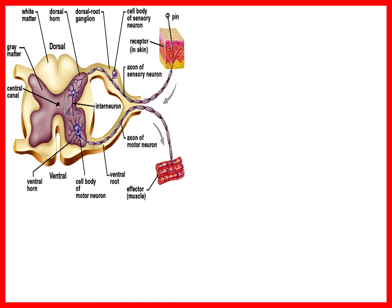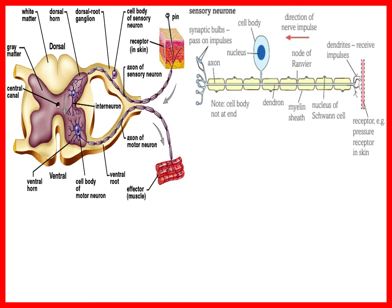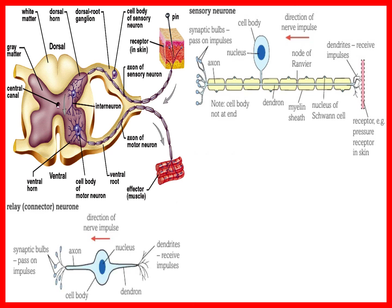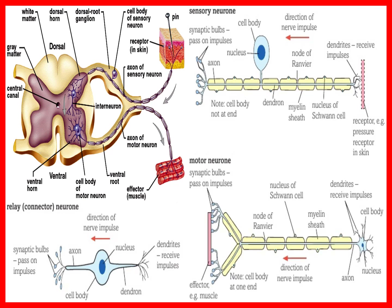The three neuron types in a reflex arc: sensory neurons have a dendron and axon with the cell body in the dorsal root ganglion; relay neurons in the CNS are not myelinated and are very short; motor neurons have no dendron, with cell bodies in the CNS and axons passing through the ventral root to the effector (muscle or gland).